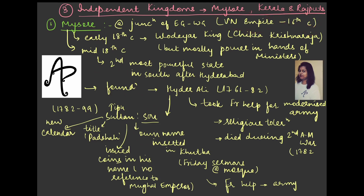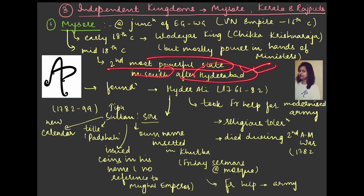In the early 18th century, the region of Mysore was ruled by the Vodiyar dynasty — this is important for prelims. The ruler was Chikka Krishna Raja, but at least remember the dynasty name: Vodiyar. Despite the king being on the throne, real power was in the hands of the ministers, as was happening in many other cases. By mid-18th century, Mysore became the second most powerful state in the southern region after Hyderabad, which had its own prominence established by Nizamul Mulk.